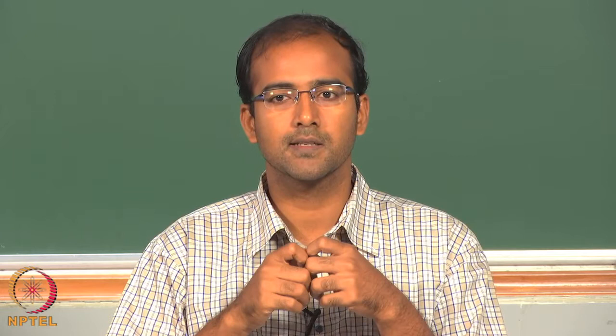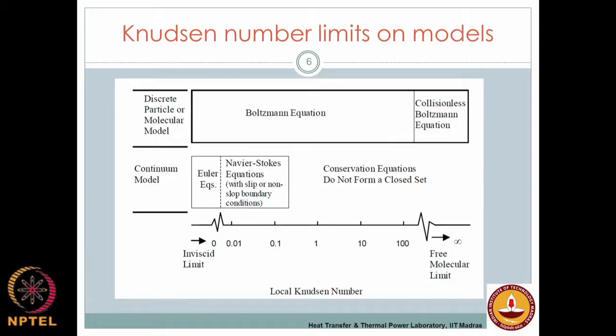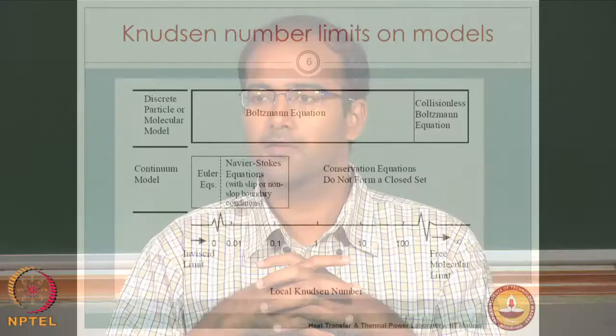Rarified gases are a good example of high Knudsen number with respect to molecules as energy carriers. We do not encounter rarified gases commonly on Earth, but leaving the atmosphere into outer space you encounter rarified phenomena — the Knudsen number can exceed 100 and approach infinity. Rarified gases are one case where the Knudsen number can be very high.